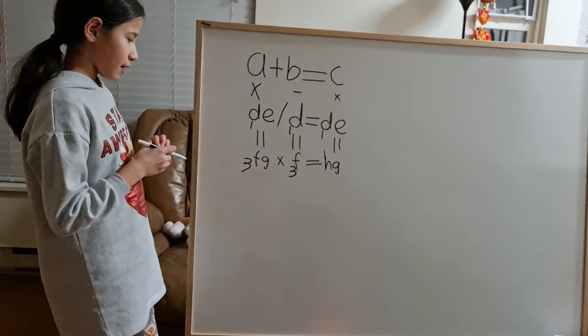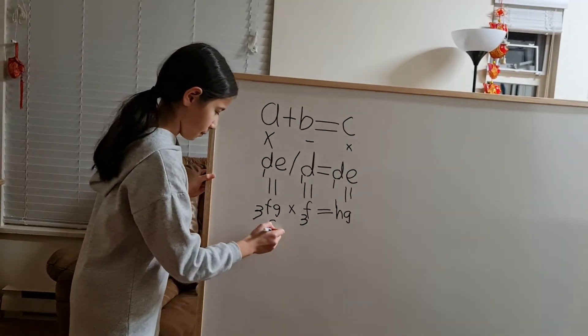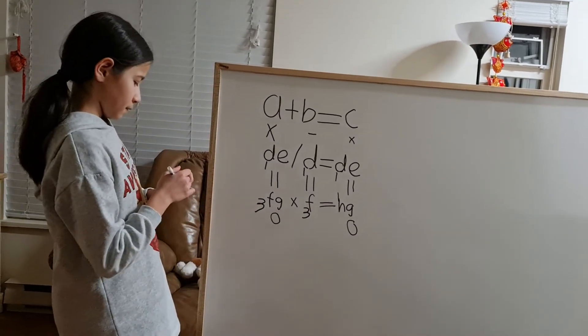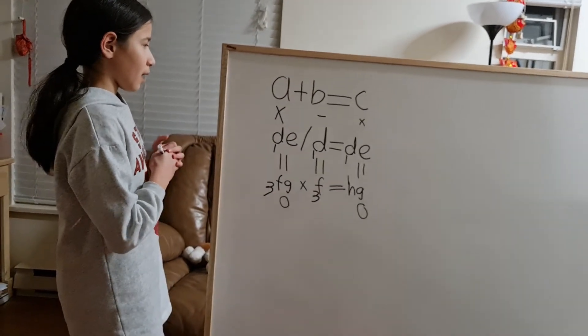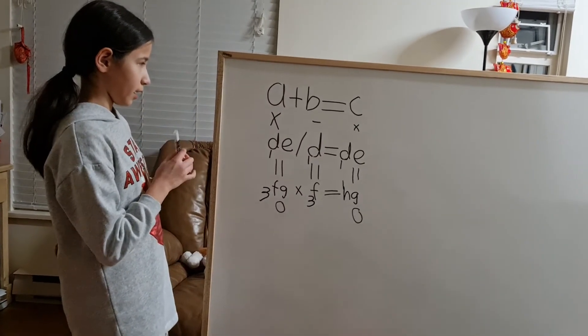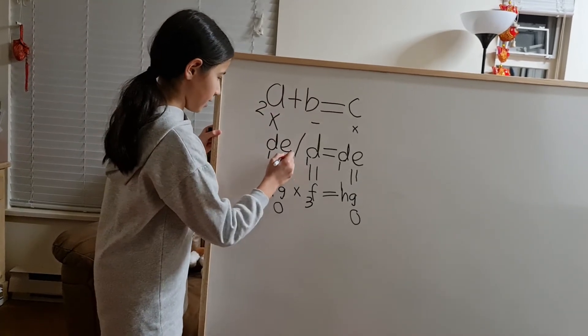So after that, I can tell that G is 0. So A times 10 something is equal to 30. So A is 2 and E is 5.